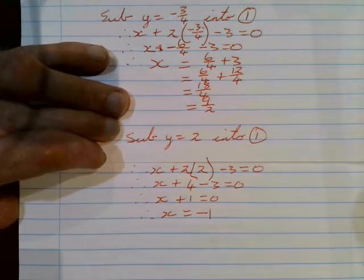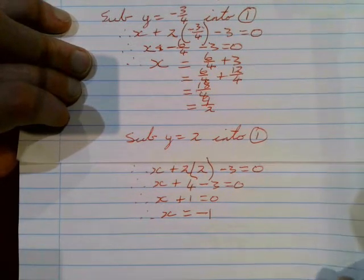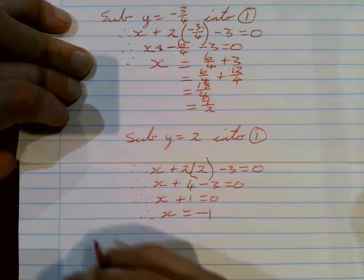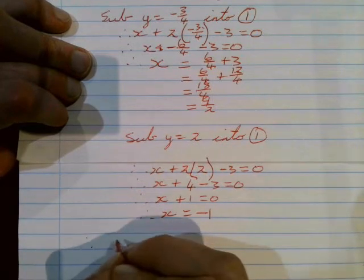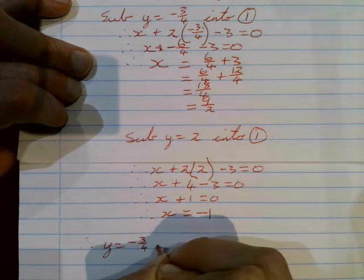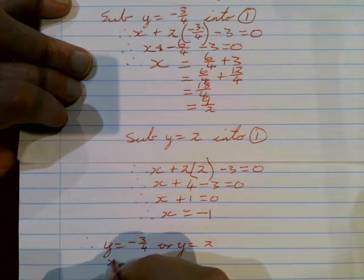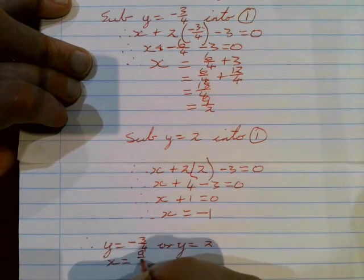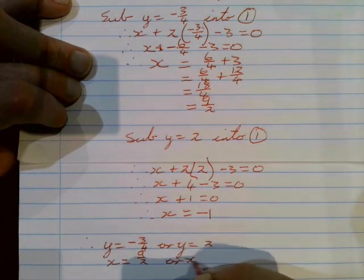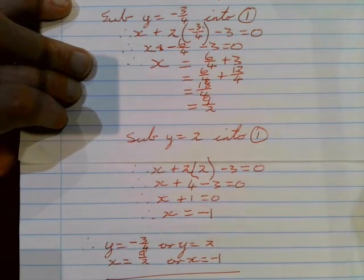Getting x on its own, we find that x equals minus 1. Now we have all the values we need. At the end of any simultaneous equation we state everything we found: y equals minus 3 over 4 or y equals 2, and x equals 9 over 2 or x equals minus 1. Once you have all four of those values, you've completed your simultaneous equation.